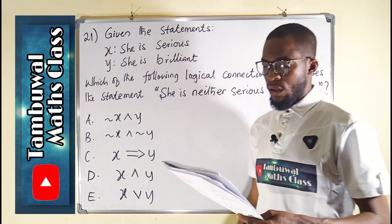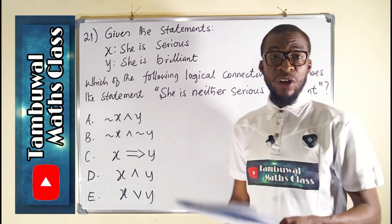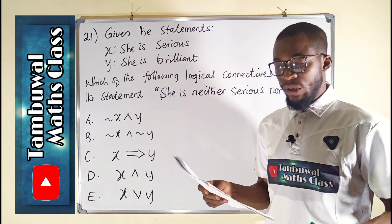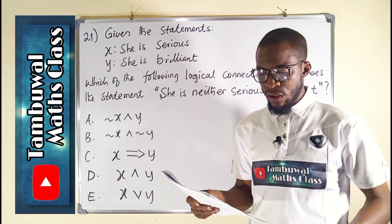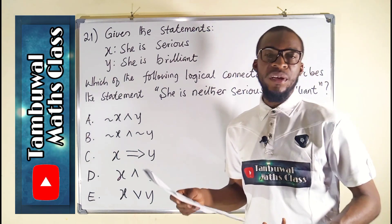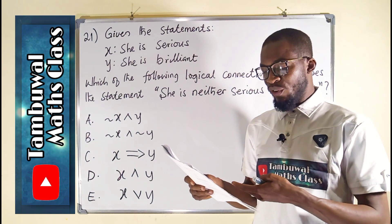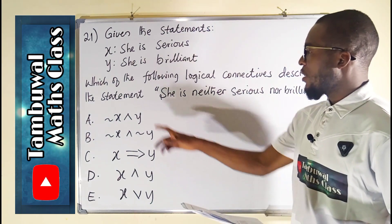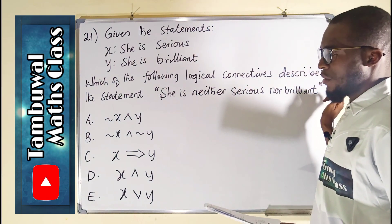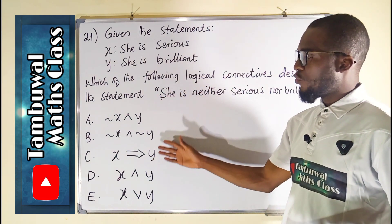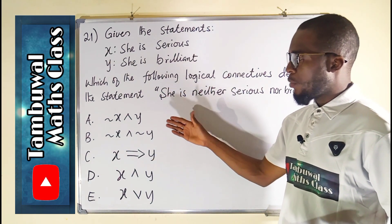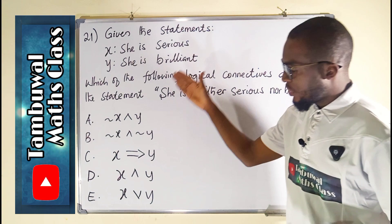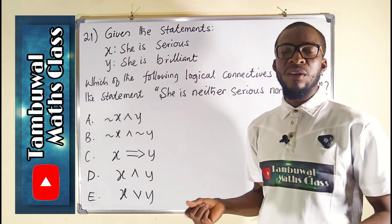Question number 21 is a logical reasoning question. It says that given the statements: X stands for 'she is serious' while Y stands for 'she is brilliant.' Which of the following logical connectives describes the statement 'she is neither serious nor brilliant?' You can see some available options here which we want to decide the best that describe she is neither serious nor brilliant. Let me translate all of this so that we can pick the right option.